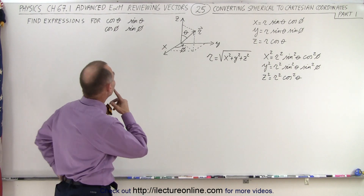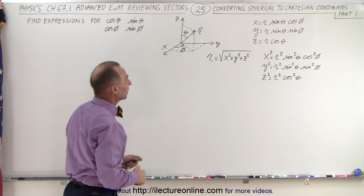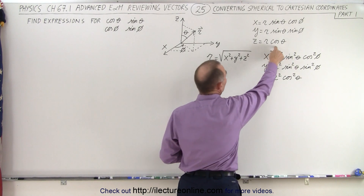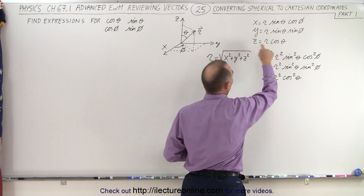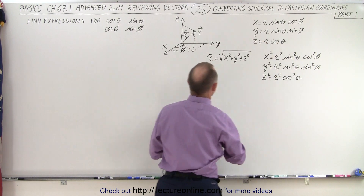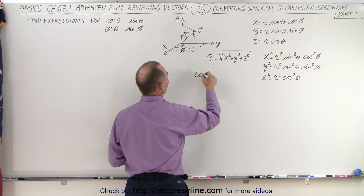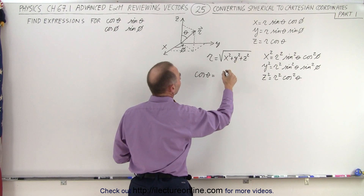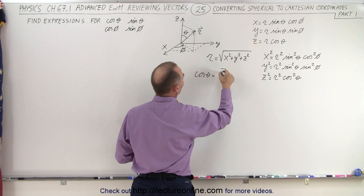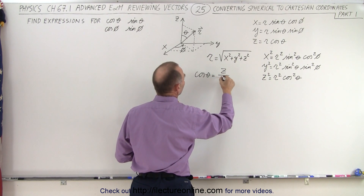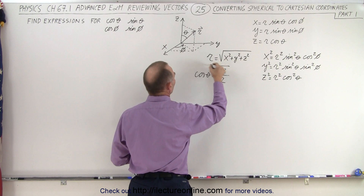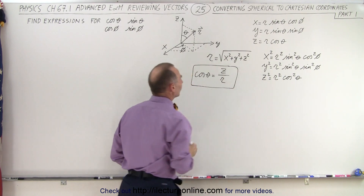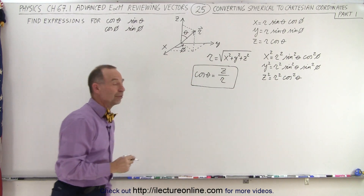First let's define the cosine of theta. The cosine of theta can be defined in terms of z and r, so we can say that the cosine of theta is simply equal to z divided by r.